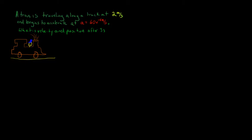In this video, a train is traveling along a track at 2 meters per second and begins to accelerate at a = 60 times the velocity to the minus fourth meters per second squared. We want to figure out the velocity and the position of the train after it's been moving for three seconds. The initial velocity is 2 meters per second, acceleration is 60v^(-4) m/s², and we're looking for final position and final velocity when t = 3 seconds.